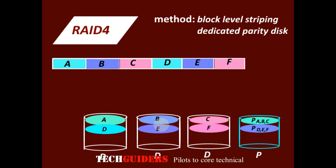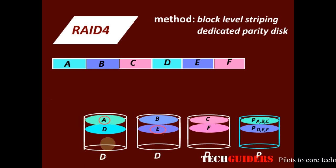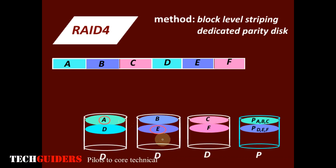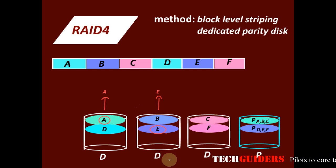First, consider the read performance. Suppose we have two read requests: one for block A and one for block E. Thus, while disk 1 services the request for block A, in parallel, disk 2 can service the request for block E. Hence, multiple requests can be serviced at the same time. For random reads from different portions of the logical disk, this RAID level can perform well. So there is improved read performance.